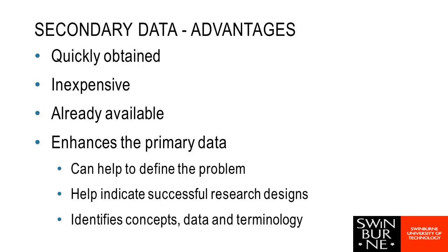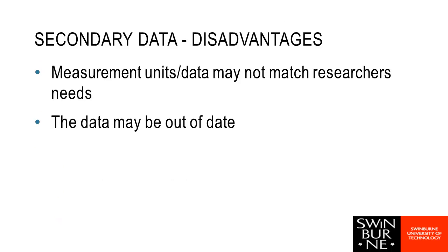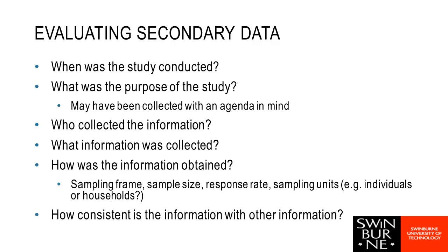The advantages of secondary data are that it's much quicker to obtain — someone's already collected it, it's already there — and it's generally inexpensive, depending on who collected it and whether they expect you to pay. It can also enhance your primary data collection, helping you write a better survey and do better sampling. The downside is it might be a little old or not perfectly match your population — it could be research from overseas or a slightly different group.